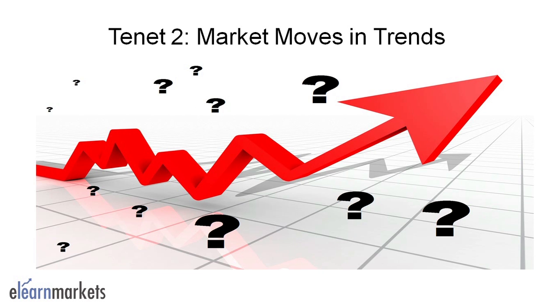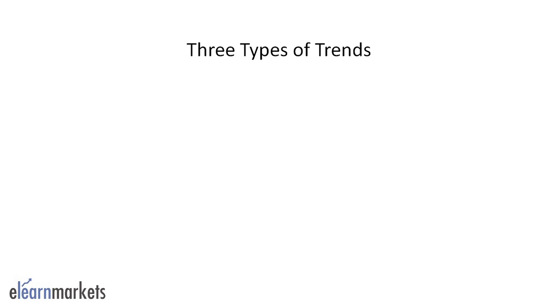Moving on to Tenet 2: The market moves in trends. There are three types of trends in the market. The first is the main movement, or the primary movement, also known as the major trend, which may last for less than a year to several years. It can be bullish or bearish.